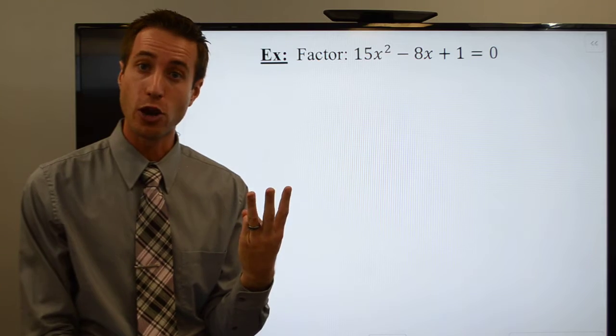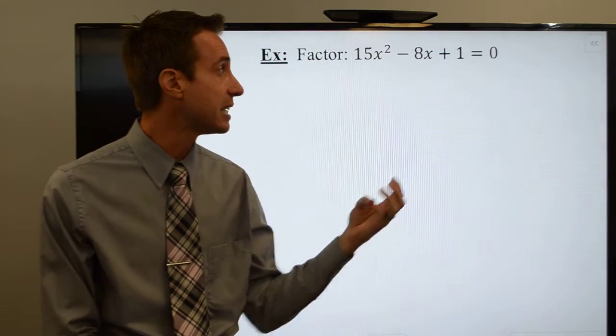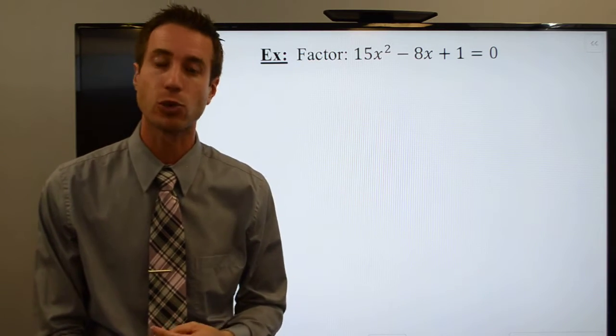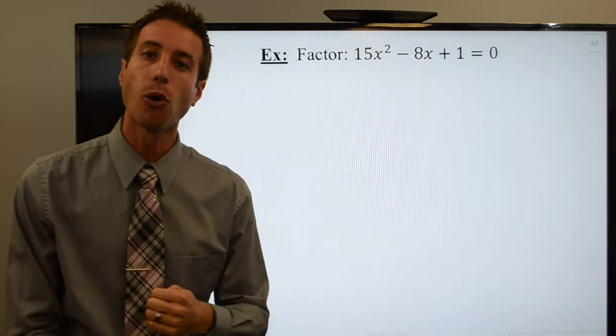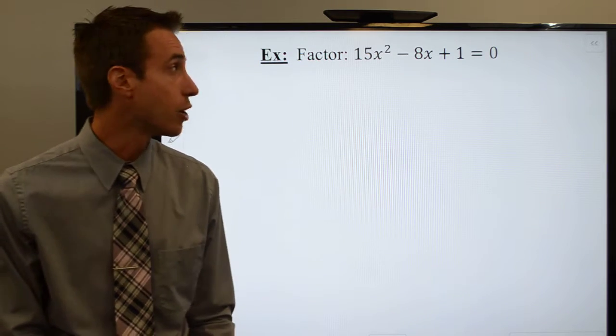Is it a perfect square trinomial? Well, neither 15 or 1 are perfect squares, so it can't be a perfect square trinomial. That means I've got to go with option number four, factoring a general trinomial.